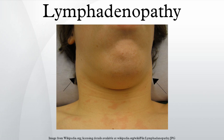Bites from certain venomous snakes such as the pit viper may also be a cause. Unknown etiology includes: Kikuchi disease, progressive transformation of germinal centers, sarcoidosis, hyaline vascular variant of Castleman's disease, Rosai-Dorfman disease, Kawasaki disease, and Kimura disease. Benign lymphadenopathy is a common biopsy finding and may often be confused with malignant lymphoma.